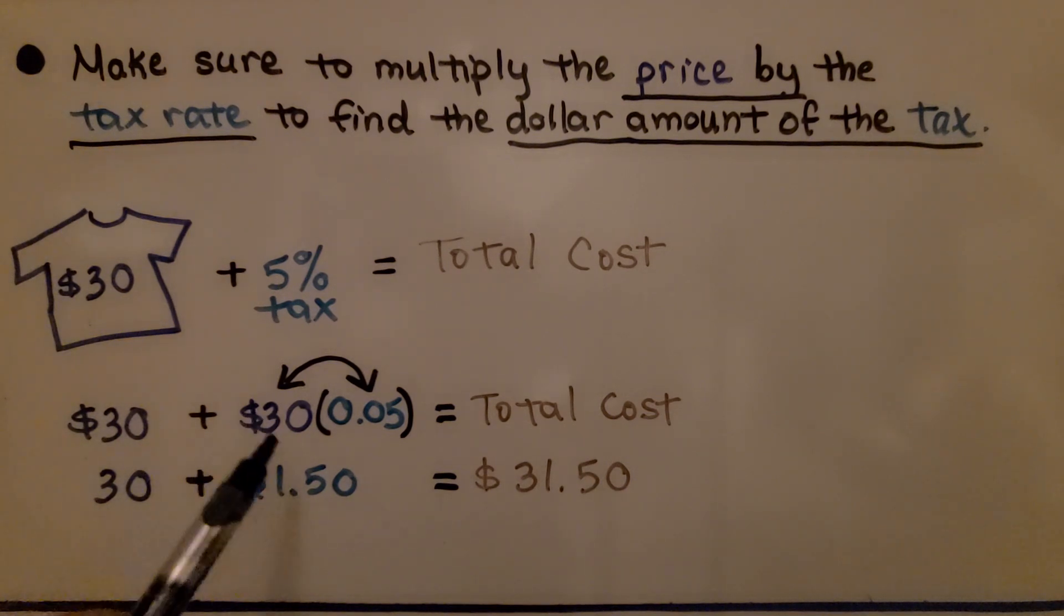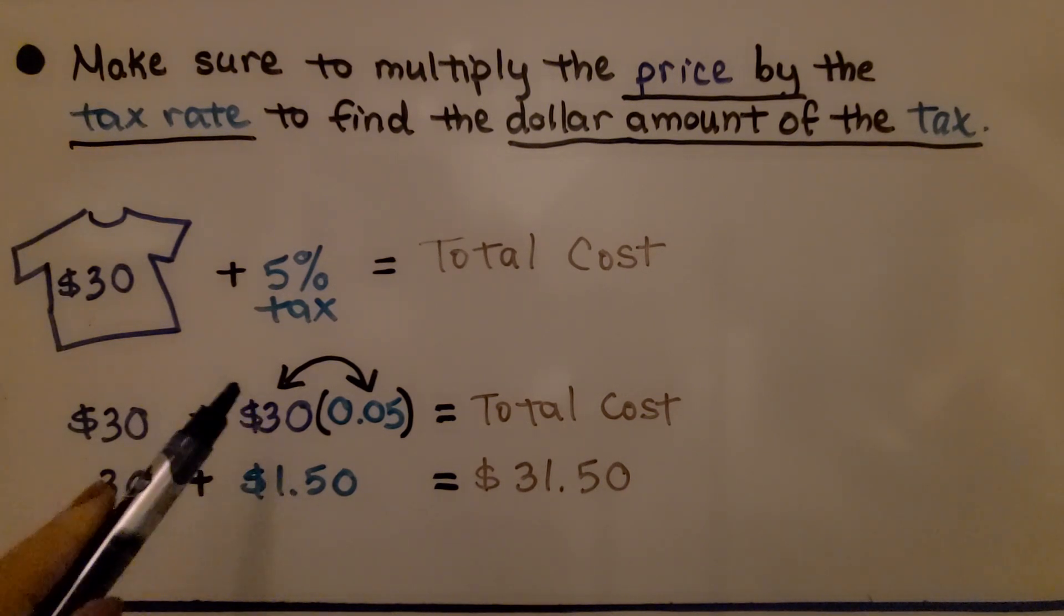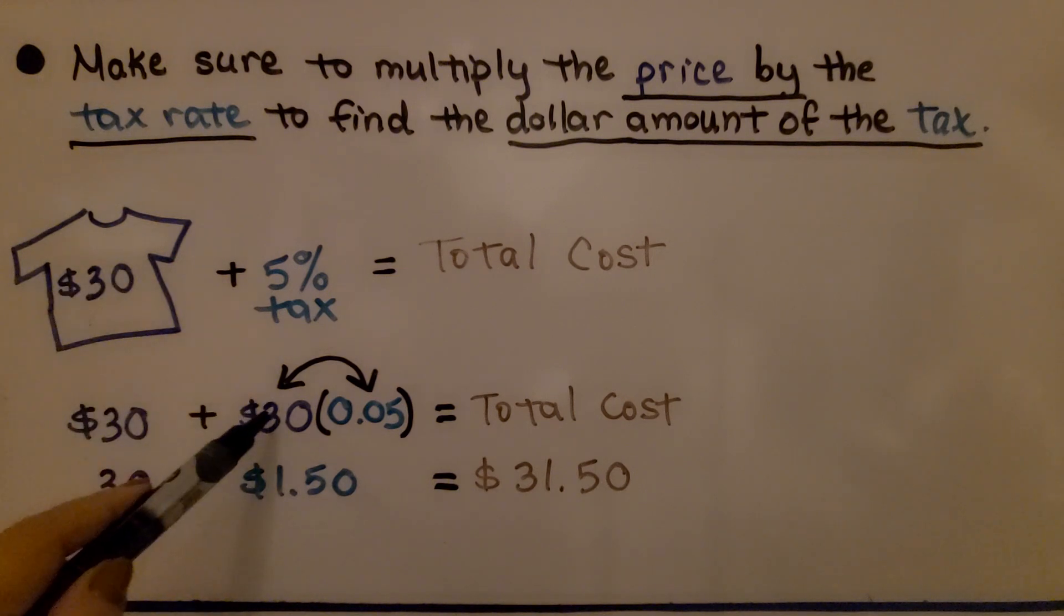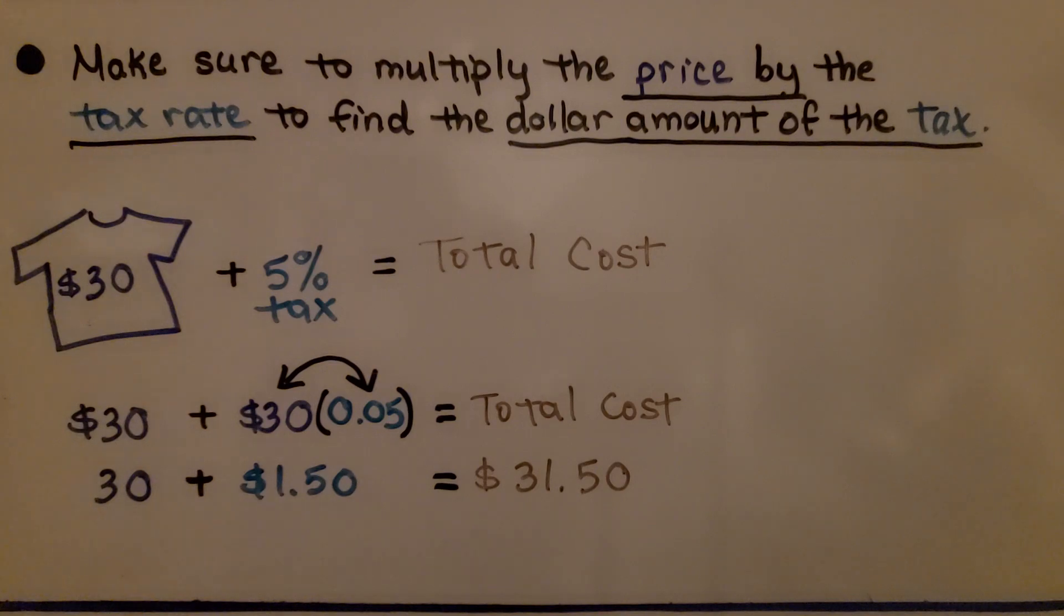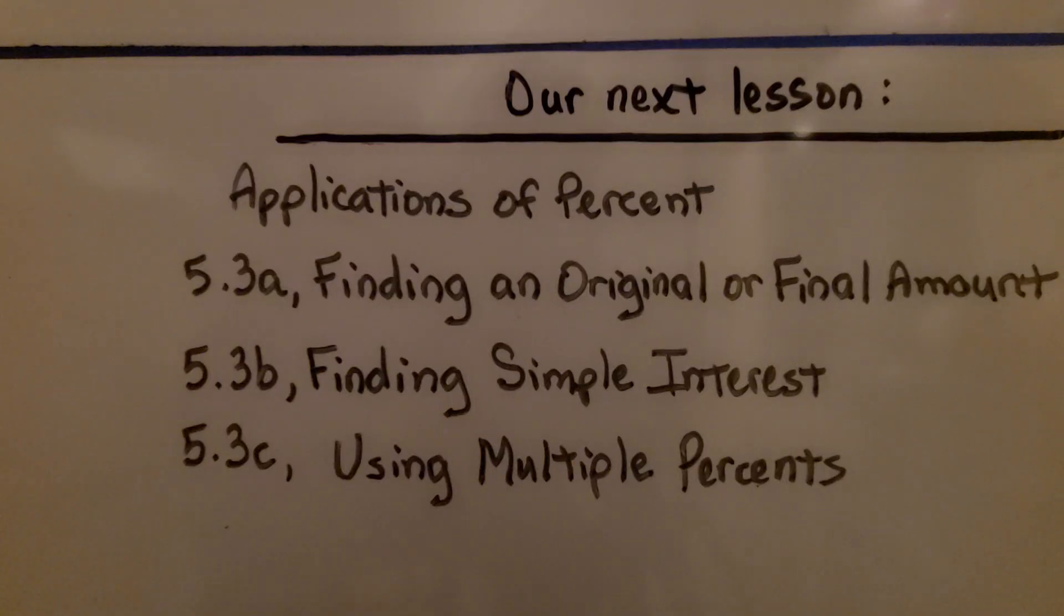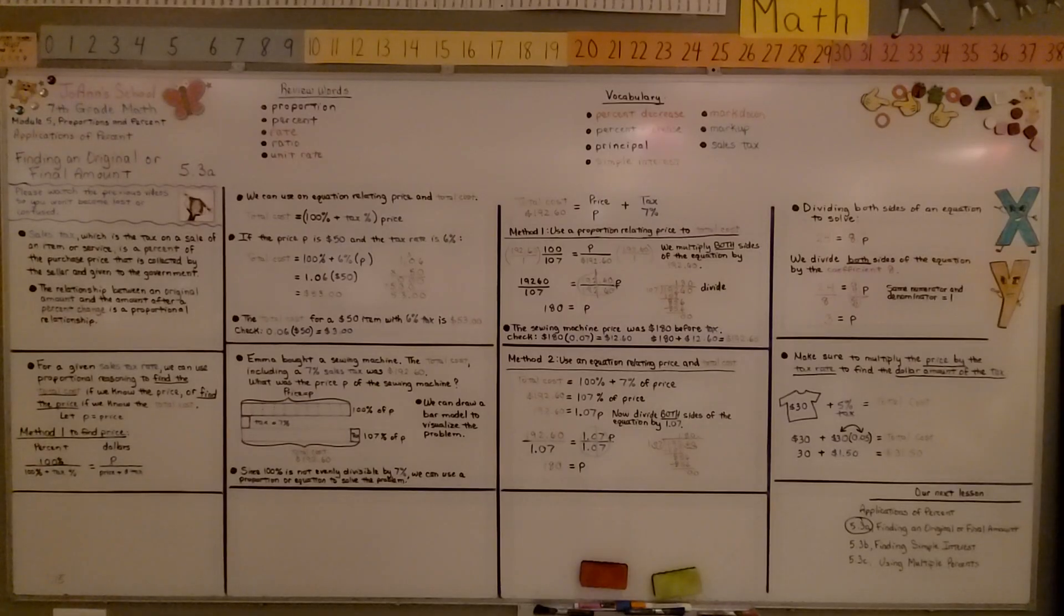To find the dollar amount of the tax, we multiply the price of the item times that tax percentage written as a decimal. We're finished with 5.3a. We're going to move on to the second part, finding simple interest. I hope you enjoyed the rest of your day, and I hope this was helpful. And join me for the second part of the lesson. Bye!